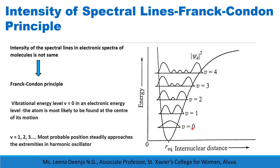In the V equal to 0 level, the probability of finding the atom is maximum at the equilibrium position. But in the V equal to 1 level, the probability of finding the atom at the equilibrium position is 0; the probability is maximum when it reaches the extreme position. For V equal to 2 also, the probability is maximum near the extreme position. So for V equal to 1, 2, 3, etc., the probable position steadily approaches the extremities of the harmonic oscillator.